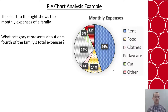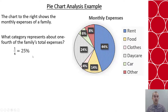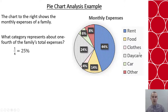Let's look at some examples. We have a pie chart showing the monthly expenses of a family. A reading-the-data question: what category represents about one-fourth of the family's total expenses? One-fourth is about 25%, so we look for a category close to 25%. The category at 24% is the closest. Looking at our key, that represents daycare. So daycare at 24% is about one-fourth of the family's total expenses.